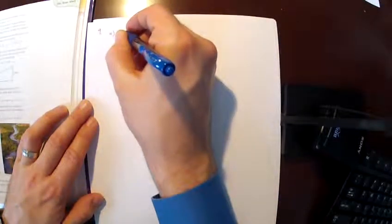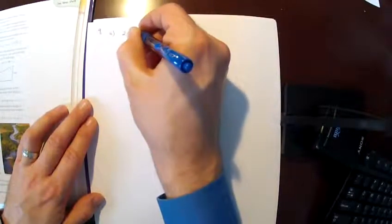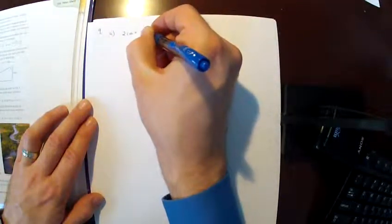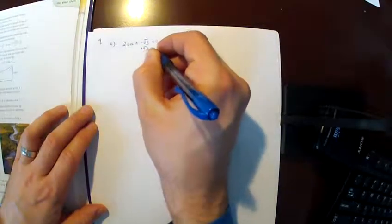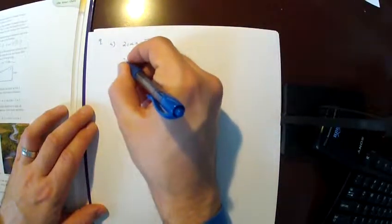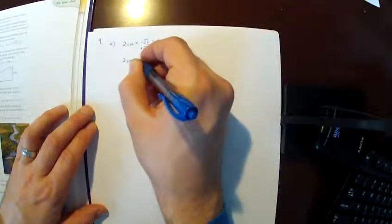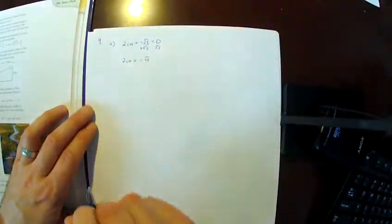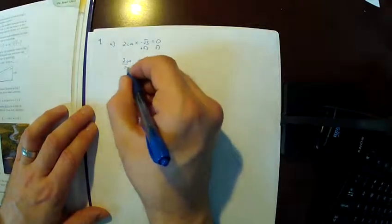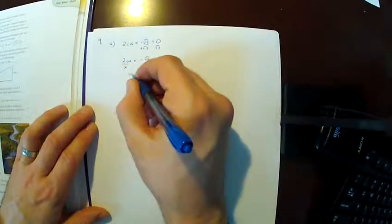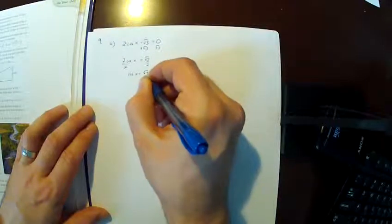Letter A asks us to solve where does 2 cosine of x minus the square root of 3 equals 0. I'm going to follow my steps for isolating x. I'll begin by adding the square root of 3 to both sides, which leaves 2 cosine of x equals the square root of 3. Next we'll divide by 2 on both sides. That leaves cosine of x equals the square root of 3 over 2.